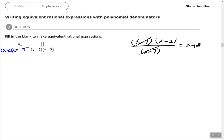What that tells me is that I had to multiply this first denominator by x plus 2 to get that new denominator. Whatever I do in my denominator, I need to do in my numerator to keep the fraction equivalent.